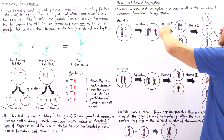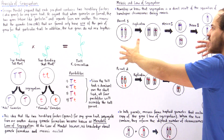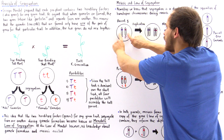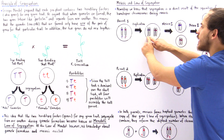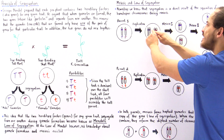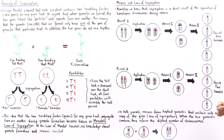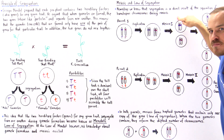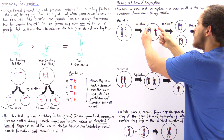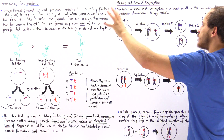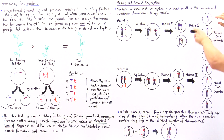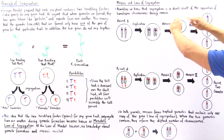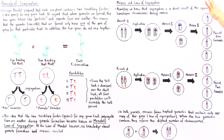During meiosis, replication occurs and each chromosome produces sister chromatids — the two dark purple T chromatids are identical, and the two light purple T chromatids are identical, but the pairs are homologous to each other. In meiosis I, the homologous chromosomes are pulled to opposite sides forming two cells. Then in meiosis II, the sister chromatids separate, producing four gametes for parent one.